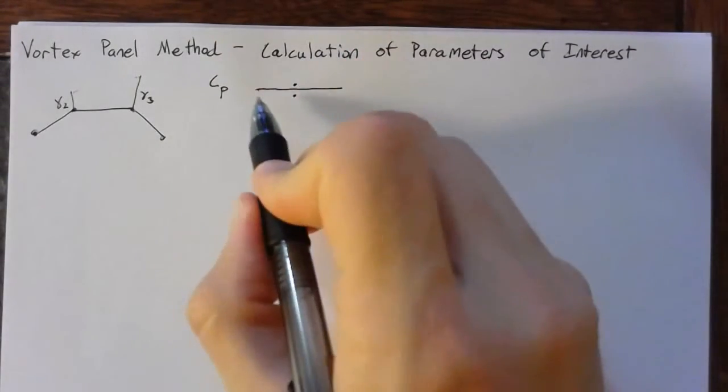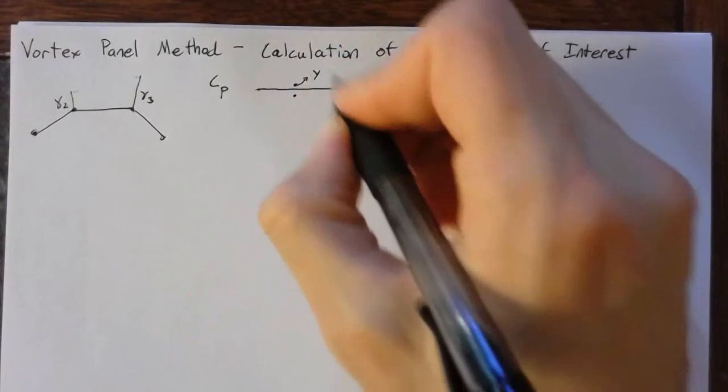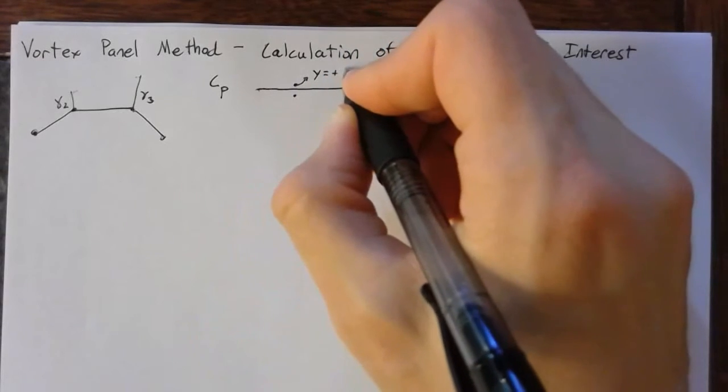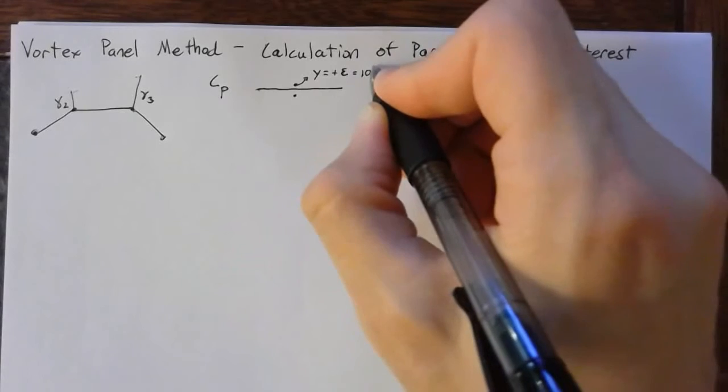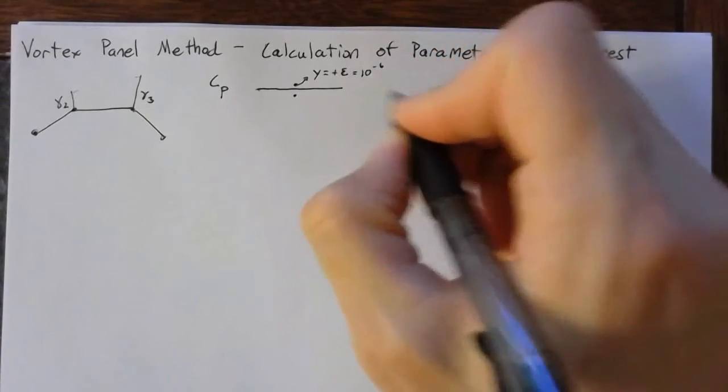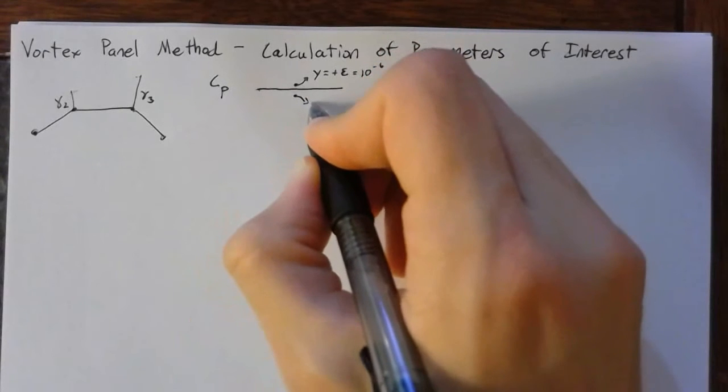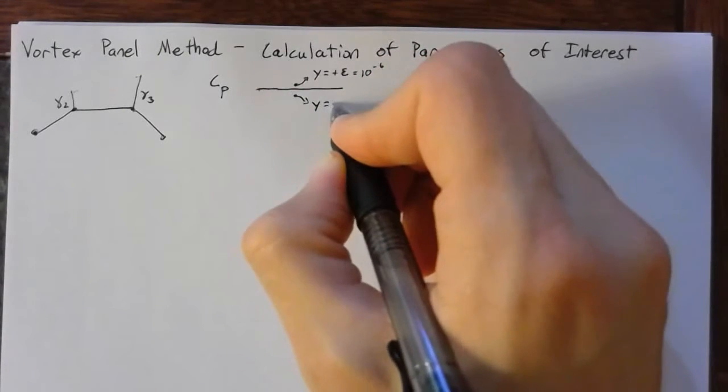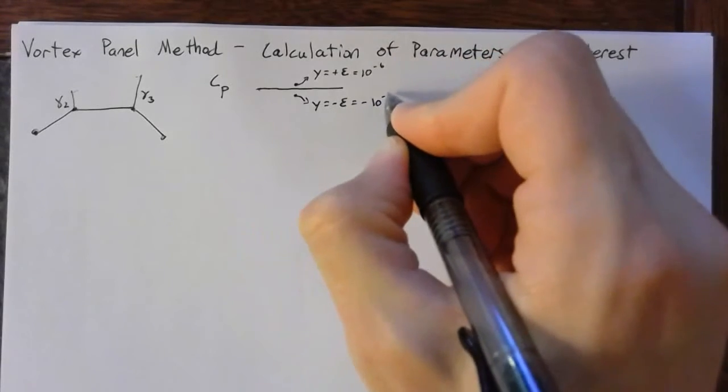So if you're looking at this in panel coordinates, you want to set your y value equal to some positive epsilon to find the top. And this is some small number like 10 to the negative 6th or even smaller than that. And then for the bottom surface, this is simply going to be some negative epsilon. So we'll set this equal to negative 10 to the 6th.